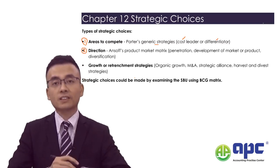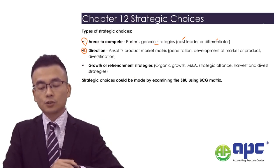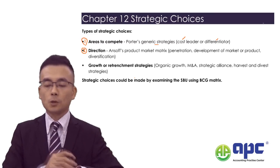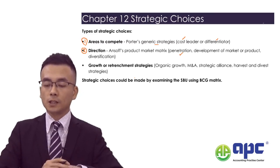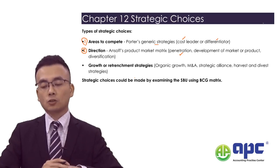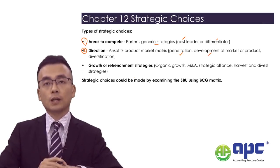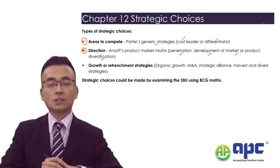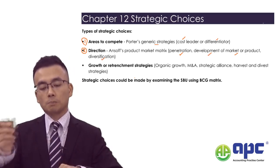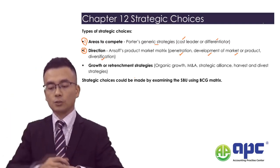If we talk about the directions that we can compete, we can use the Ansoff Growth Vector Matrix. For example, selling your existing product to existing market is called market penetration, or you can develop a new product, develop a new market, or diversify your business — those are the directions you're going to compete.